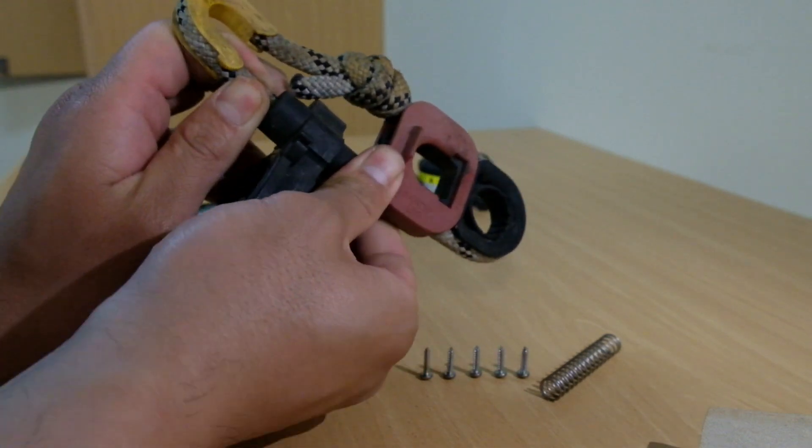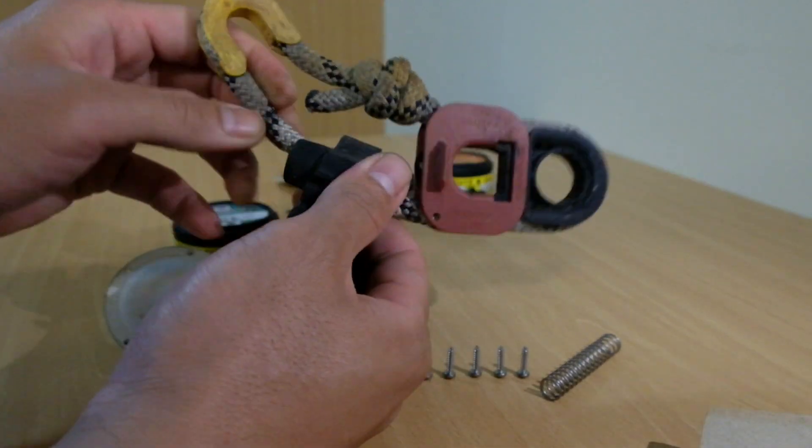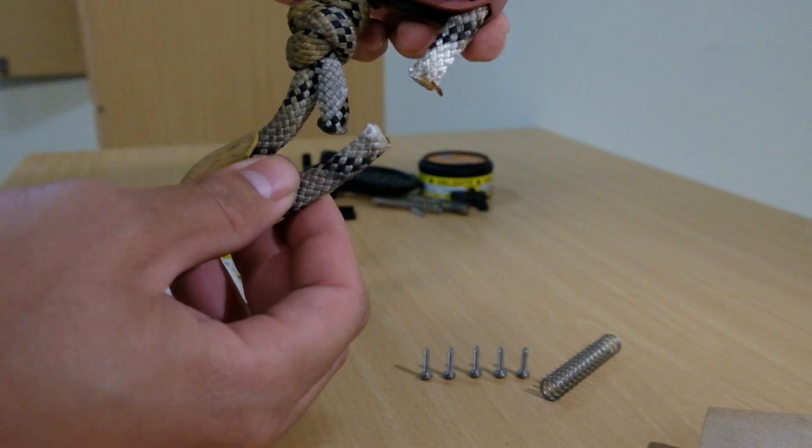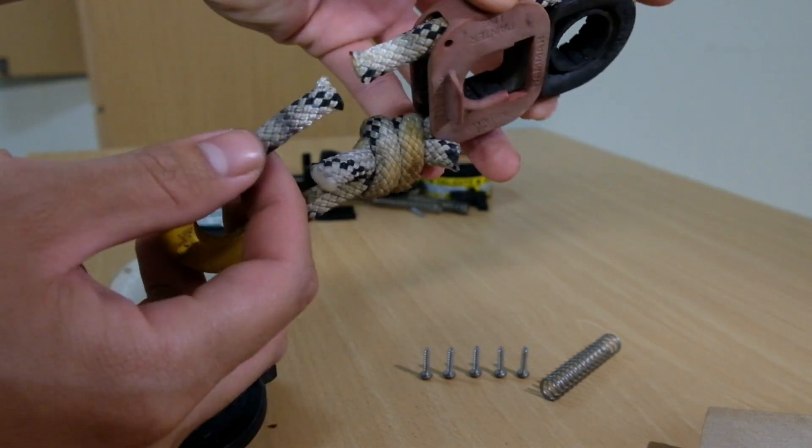This means that the blade activated and has cut through the strong rope. With that much spring force, you get results like this. A clean cut all around.